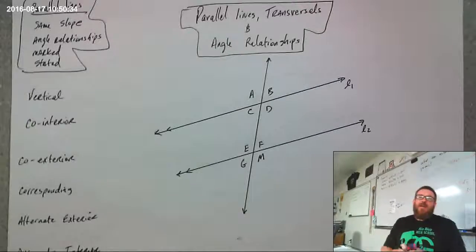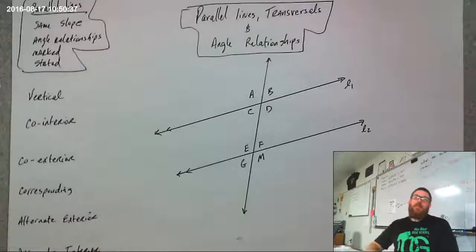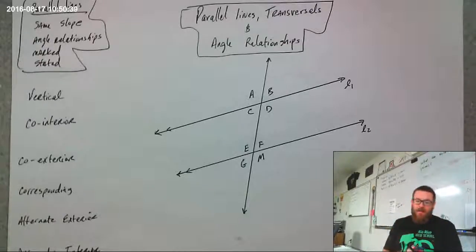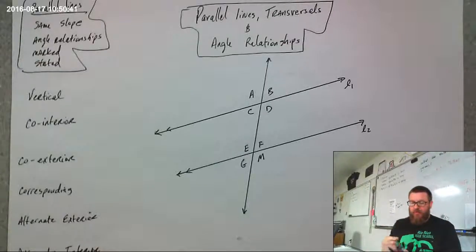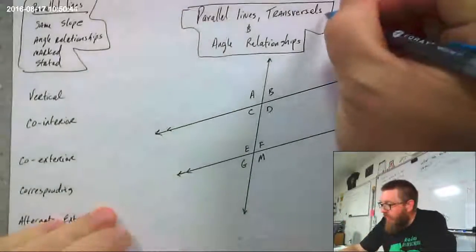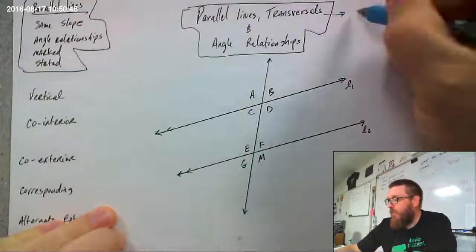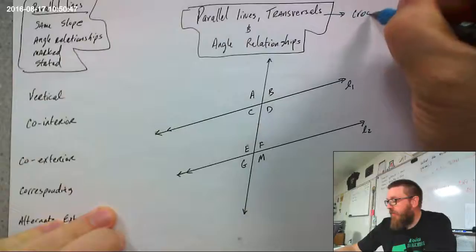We're going to do a quick review of some of the properties of angles that are created by parallel lines and transversals. A transversal is a line that crosses parallel lines.